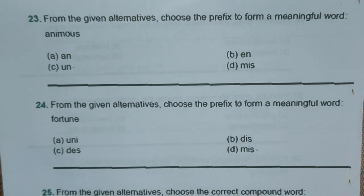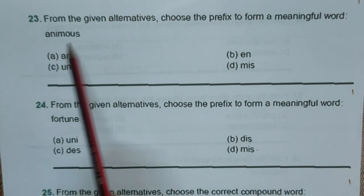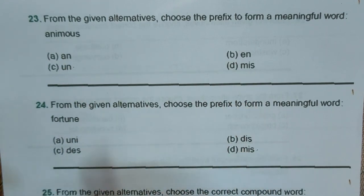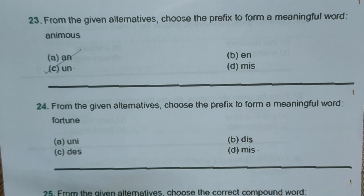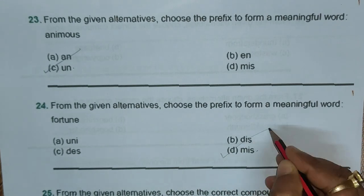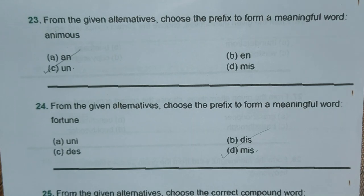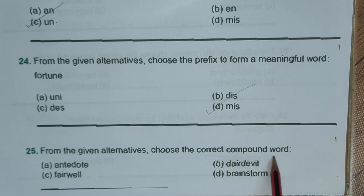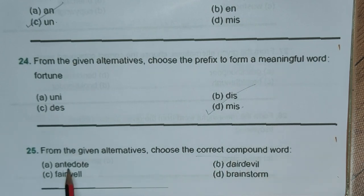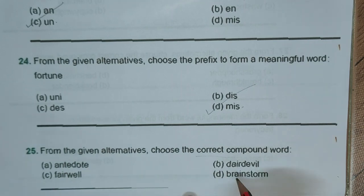Question twenty-three: choose the prefix to form a meaningful word with 'animus' — options are A an-, B un-, C on-, D mis- — correct answer is C 'un-,' and the word is 'unanimous.' Question twenty-four: choose the prefix for 'fortune' — options are A uni-, B dis-, C de-, D mis- — correct answer is D 'mis-,' because the word is 'misfortune.' Question twenty-five: choose the correct compound word — options are A antidote, B daredevil, C farewell, D brainstorm. Only 'brainstorm' has the correct spelling, hence option D is the right answer.